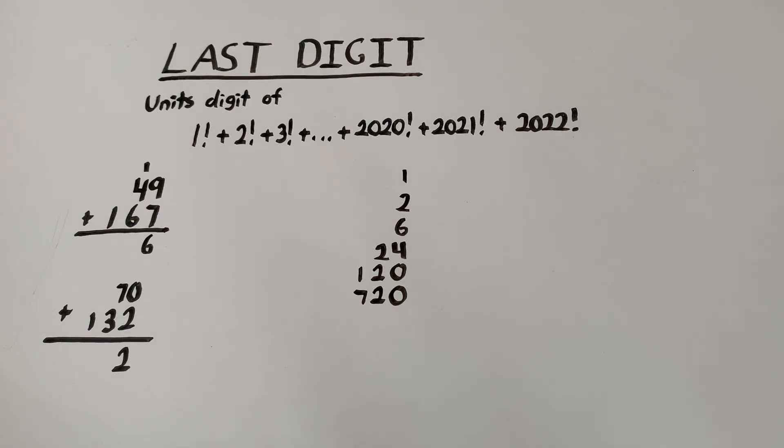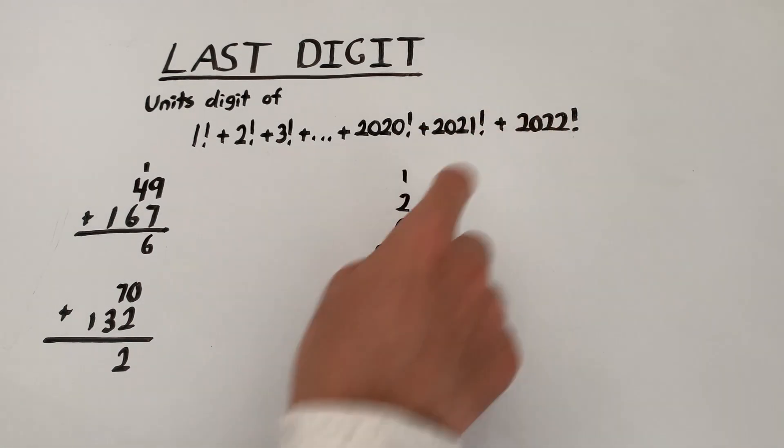And let's stop here because from here, we have something very interesting that we should take note of. Starting from 5 factorial, the units digit appears to be 0. It's 0 here. It's also 0 here. 7 factorial is 5040. That also ends in a 0. So we see that after 5 factorial, the units digit is just going to be 0 all the way up to 2022 factorial.